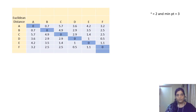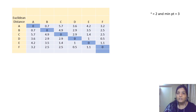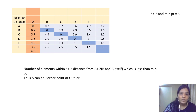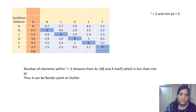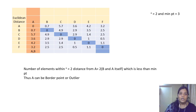Changing the epsilon value or minimum points value will produce different clusters. Let's take another example: 6 points with distances between them given. The epsilon radius is 2 and minimum number of points is 3. Starting with point A: number of points within epsilon distance is A and B — only 2 points, which is less than the minimum points of 3, so A will not form a cluster and is either a border point or an outlier.